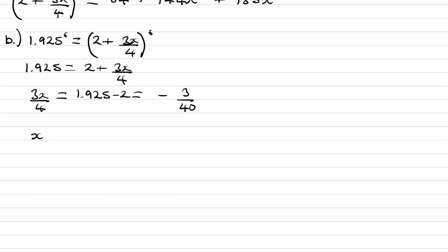And then rearrange, so multiply the right-hand side by 4 over 3, times by 4, divide by this 3. And we end up with x is equal to minus 0.1.